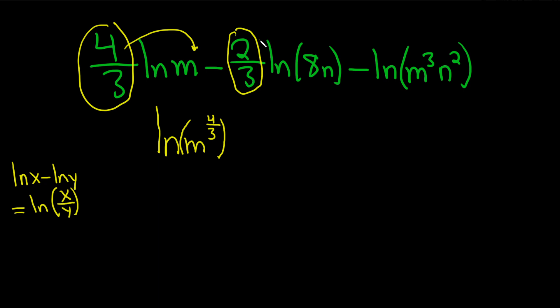And then you can take this one and do the same thing. So this will be minus the natural log of 8n to the two-thirds. Again, power rule. And then natural log of m cubed n squared.